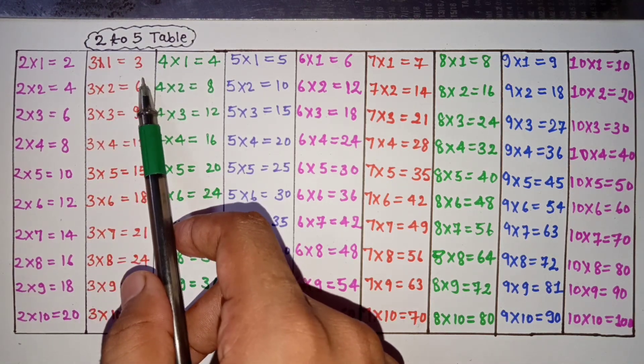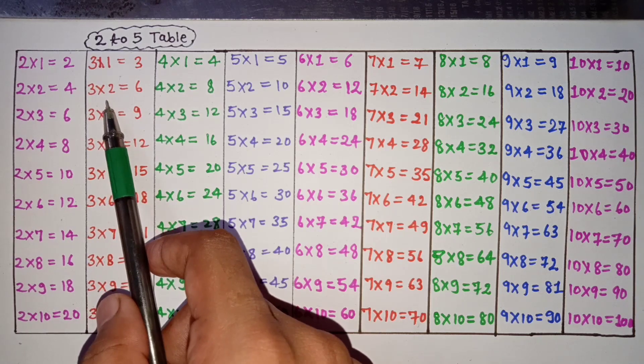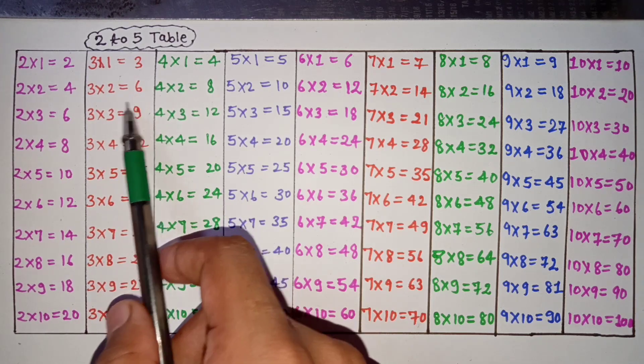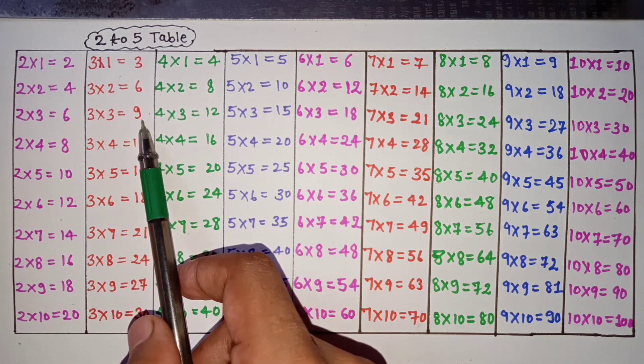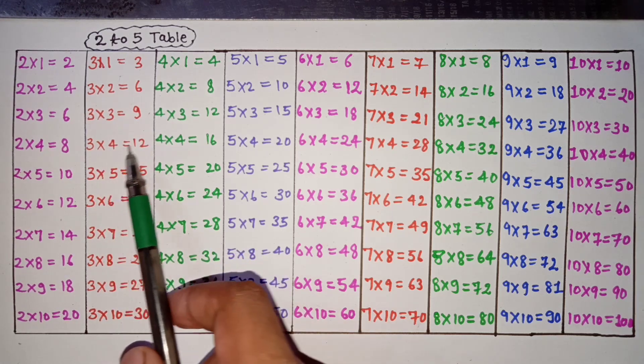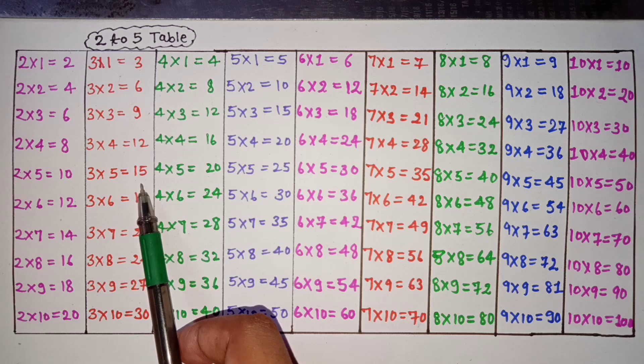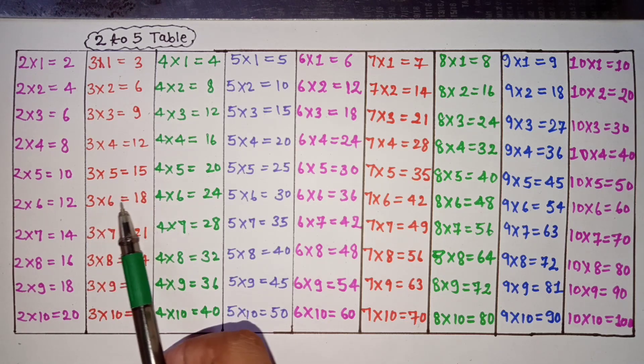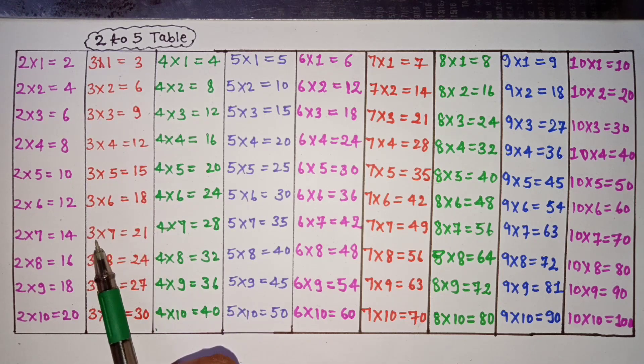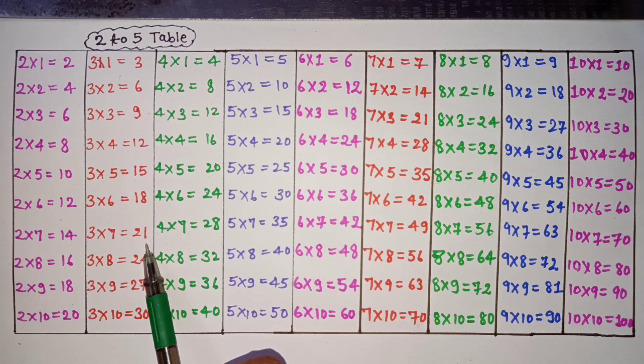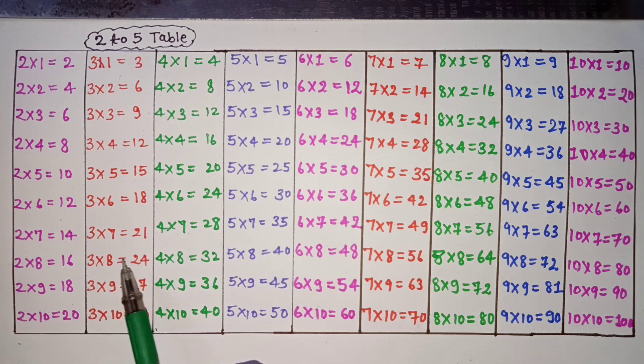3 ones are 3, 3 twos are 6, 3 threes are 9, 3 fours are 12, 3 fives are 15, 3 sixes are 18, 3 sevens are 21, 3 eights are 24, 3 nines are 27, 3 tens are 30.